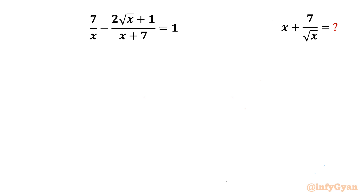Welcome back to Infigyan friends. In today's video we have got one very interesting question from algebra. Here we have to evaluate (x + 7) over root x, given the equation: 7/x minus 2√x plus 1 over (x + 7) equals 1.